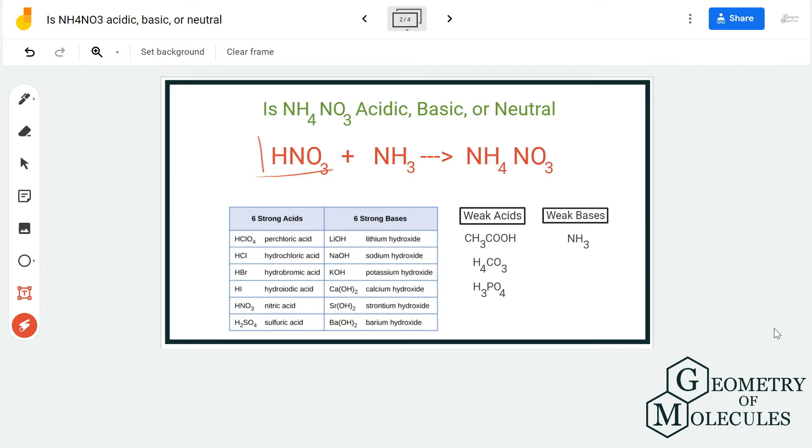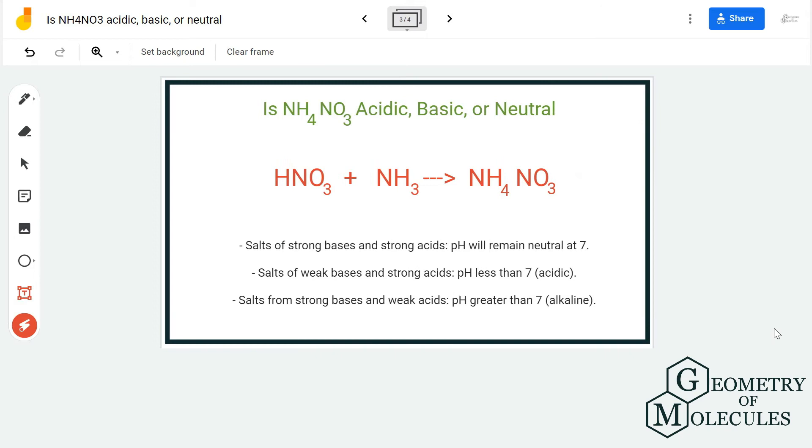According to the rules which are stated here, the salts of weak bases and strong acids have a pH which is less than 7. So any compound that has a pH less than 7 is considered as acidic. So NH4NO3 here is going to be acidic in water.